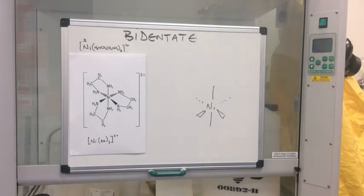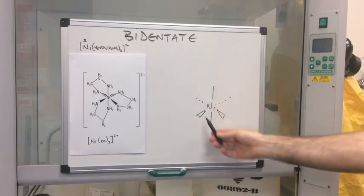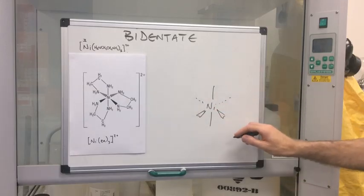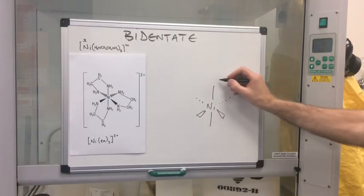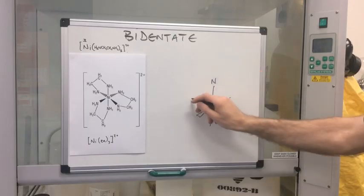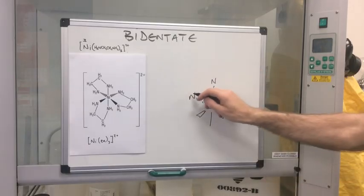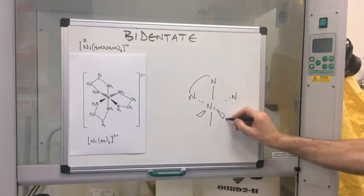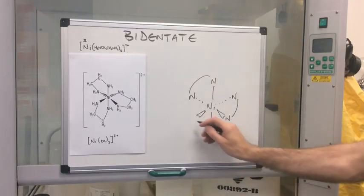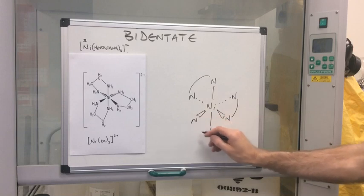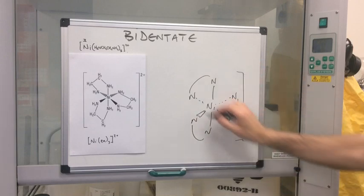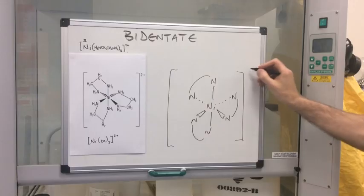Here's an easy way to draw this complex. Start with an empty octahedral shape and attach the nitrogens, drawing N-N for each ethylenediamine ligand. Then place the whole thing in square brackets with a 2+ charge.